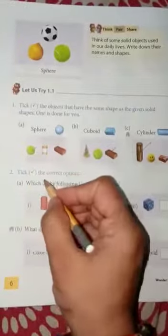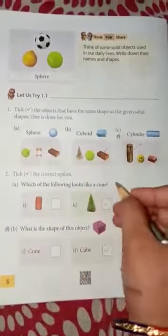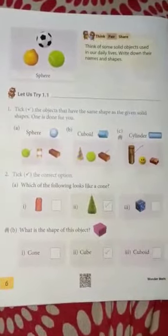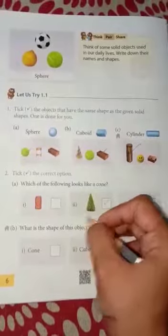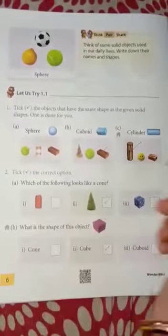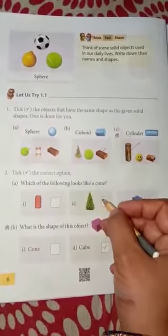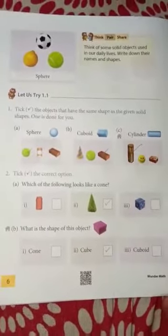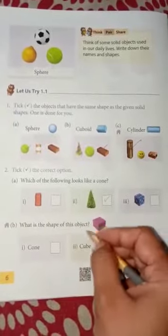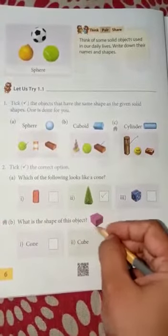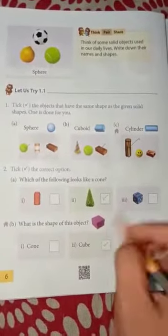Next, tick the correct option. Which of the following looks like a cone? Yahan pe three objects diye hain. Is mein hamne yeh dekhna hai ki cone ki tarah kaun sa object dikhta hai. Yeh dekhiye, yeh cylinder hai. Yeh mara cube hai. But this one is looking like cone. Same. What is the shape of this object? Yeh kaun sa, kya shape hai iski? Yeh meri cube hai. Kaun si shape hai yeh? Cube.